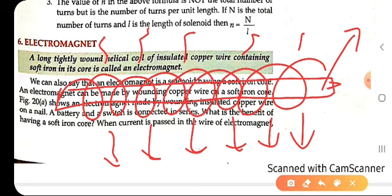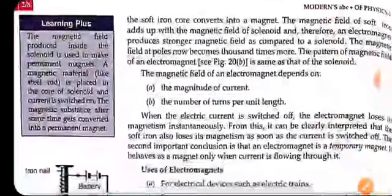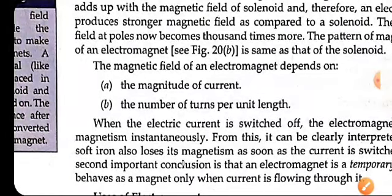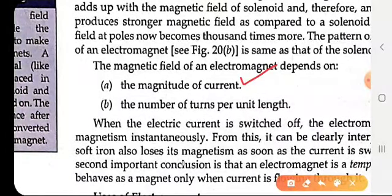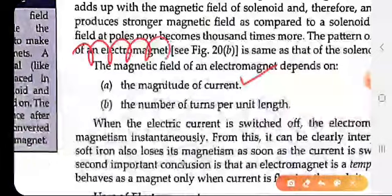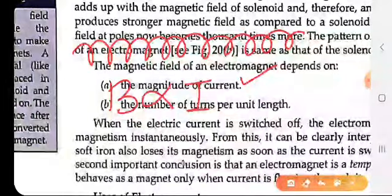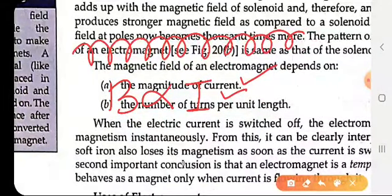The electromagnet's strength can be increased. How can we increase the magnetic strength of the wire? The magnetic field of the electromagnet depends upon first the magnitude of the current. B is directly proportional to I. The more current passes through the coil, the more will be the magnetic field produced.